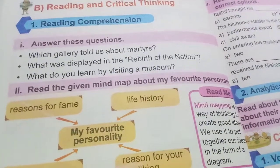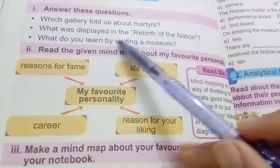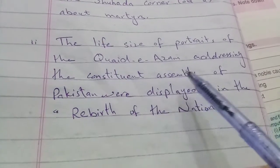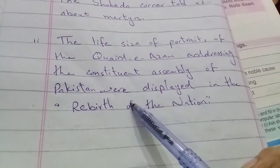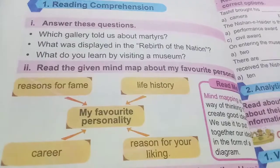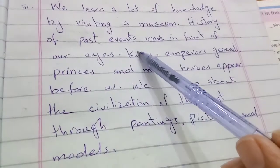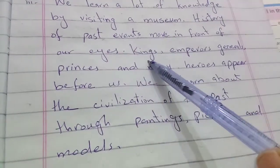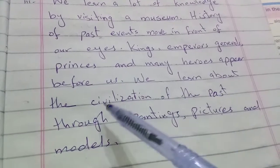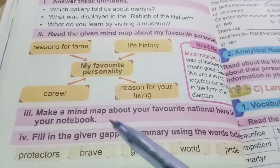Answer these questions. Which gallery told us about martyrs? The Shuhada Corner told us about martyrs. What was displayed in the 'Rebirth of the Nation'? The life-size portraits of the Quaid-e-Azam addressing the Constituent Assembly of Pakistan were displayed. What do you learn by visiting a museum? We learn a lot of knowledge by visiting a museum — history of past events moves before our eyes, kings, emperors, generals, princes and many heroes appear before us. We learn about the civilization of the past through paintings, pictures and models.